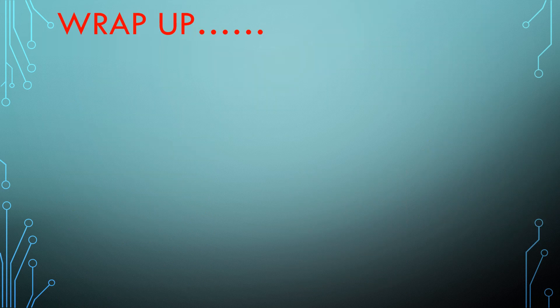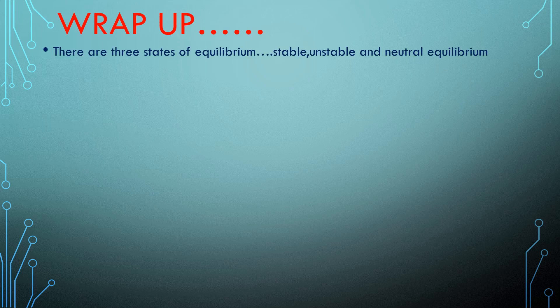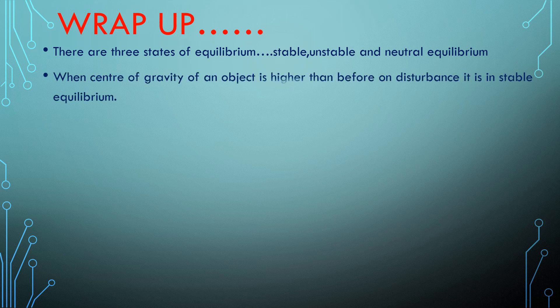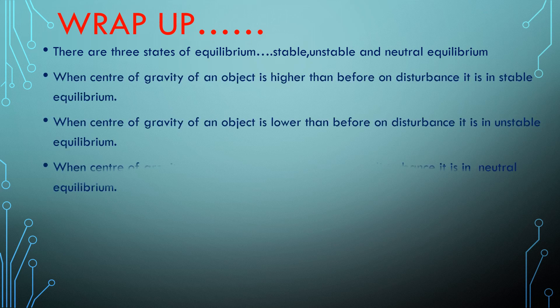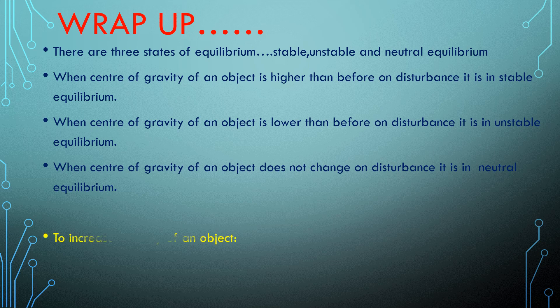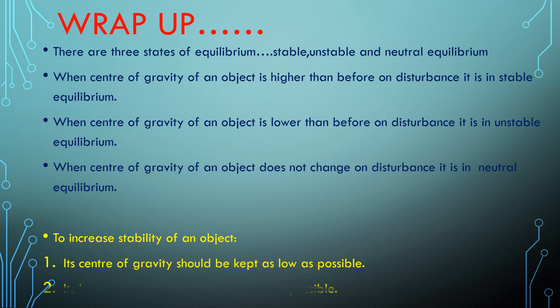Let us take a quick review. There are three states of equilibrium: stable, unstable, and neutral. In stable equilibrium, the center of gravity is higher than before on disturbance. In unstable equilibrium, the center of gravity is lower than before on disturbance. In neutral equilibrium, the center of gravity does not change on disturbance. To increase the stability of an object: number one, keep the center of gravity as low as possible; number two, keep the base area as wide as possible. Take care, Allah Hafiz.